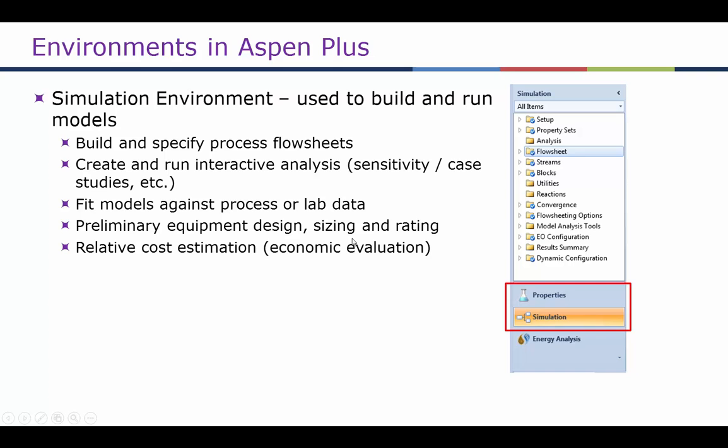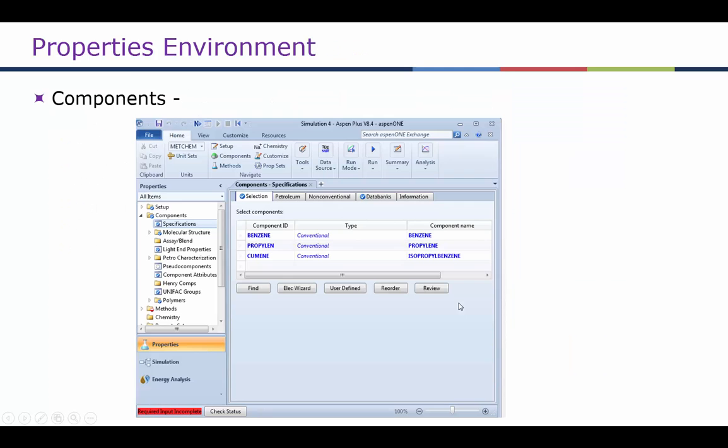For example, for a catalytic bed we can calculate how much catalyst is required for that reactor. We can also do relative cost estimation, although in this unit we will not go into economic evaluation. This is how the screenshot for the component specification looks — we can select all the components by either clicking 'Find' or simply entering the component ID.